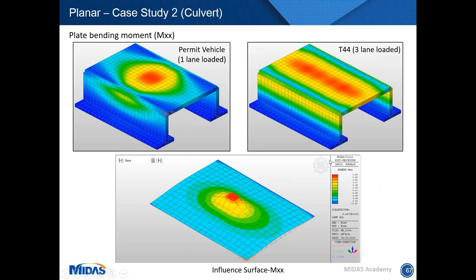Results include plate bending diagrams for permit vehicles or T44 vehicles. The permit vehicle, running on one lane centrally, shows high concentration of bending moment in the central zone. For T44 with moving load optimizer set to three maximum loaded lanes, bending is spread across the deck. Plate bending results are obtained through influence surface, and a 3D rendered view of the influence surface for bending about the longitudinal axis can be seen.